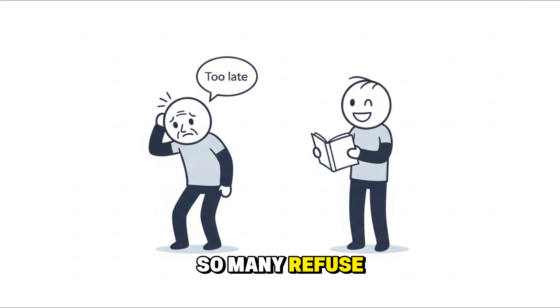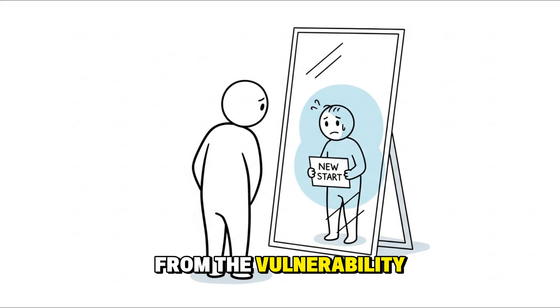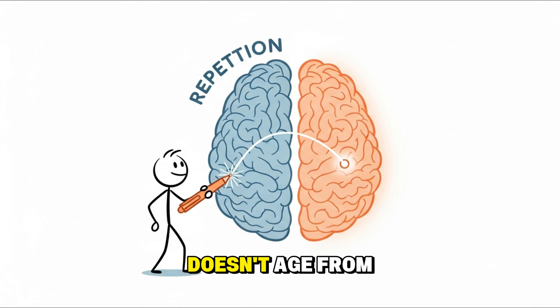So why do so many refuse to believe it? Because I'm too old is a comforting excuse. It protects us from the vulnerability of starting over. Failure threatens ego more than ignorance. That's why many people stay in the comfort of limitation. But the brain doesn't age from time. It ages from repetition. Keep learning, and you literally keep rewiring your mind toward youth.